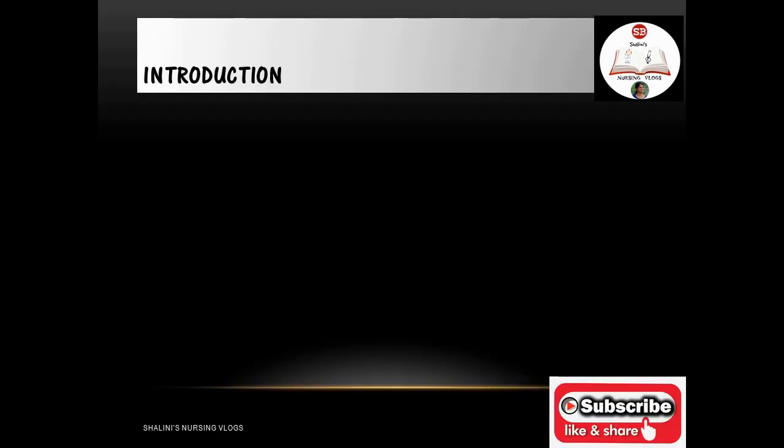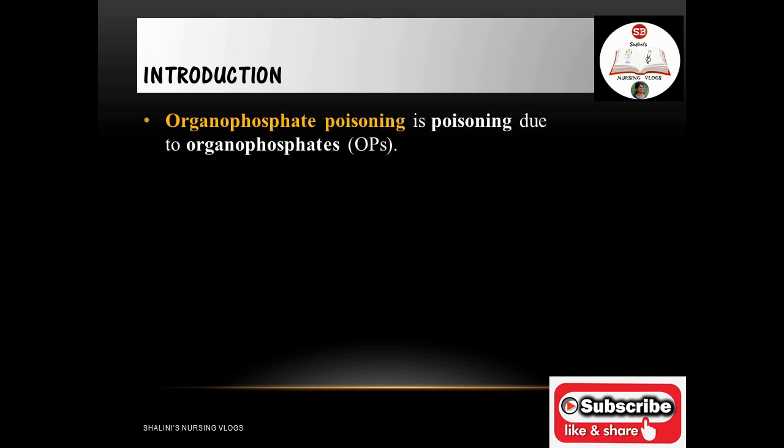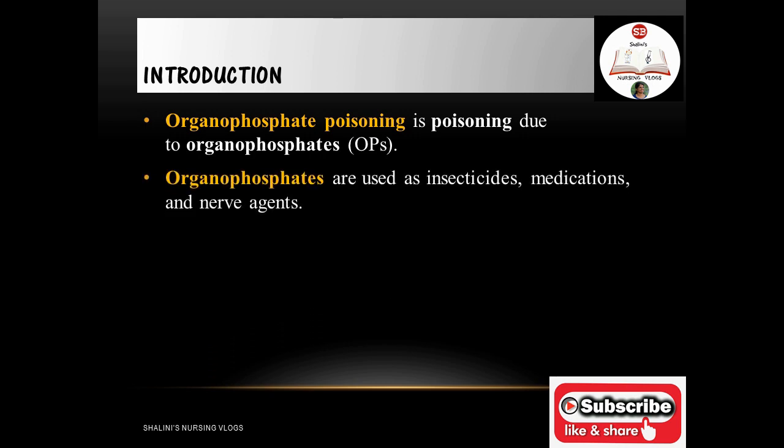As an introduction: what is organophosphorus poisoning? Organophosphate poisoning is poisoning due to organophosphate or organophosphorus compounds. These compounds include commercial insecticides, medications, nerve agents, and many more examples which will be discussed in the slides to come.